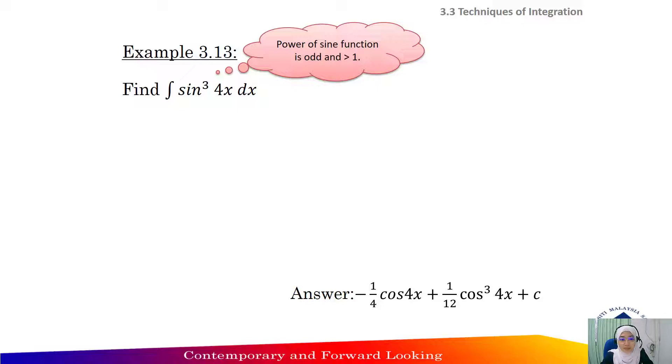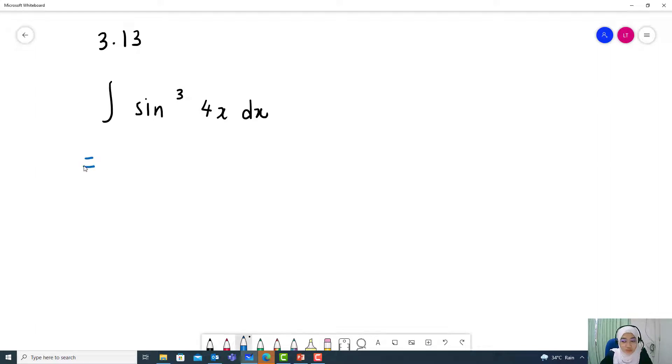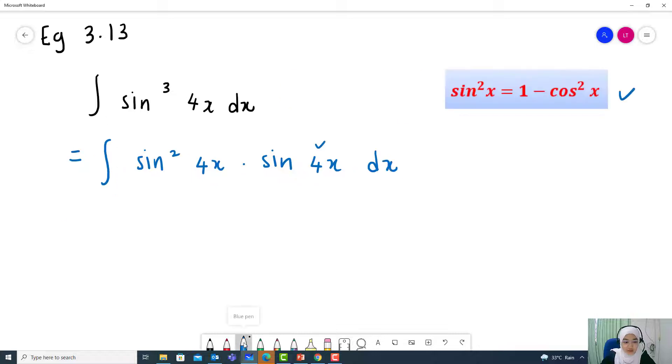Example 3.13. Find the integral of sin 4x cubed dx where 3 here, the power here, is odd and greater than 1. So first step you need to factorize this expression, become integral of sin 4x squared sin 4x dx.